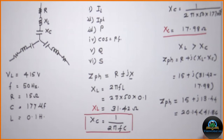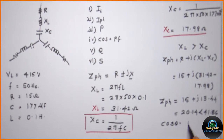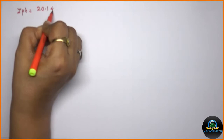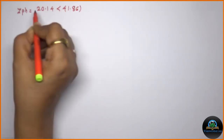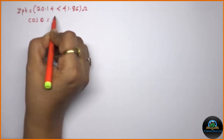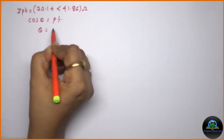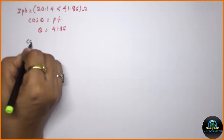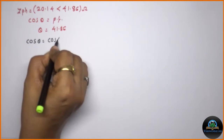It is always to be remembered that the angle associated with the impedance is the power factor angle of the circuit. So cos θ is the power factor, and that angle θ is 41.86 degrees. We can now calculate the value of cos θ, which is cos(41.86°).